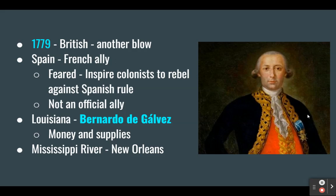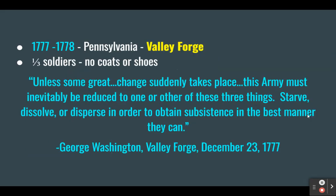In 1779, the British suffered another blow when Spain entered the war as a French ally. Spain also wanted to weaken the British Empire, but feared that American independence would inspire their own colonists to claim natural rights and rebel against Spanish rule. So Spain was not an official Patriot ally — just an ally of France. The Spanish governor of Louisiana, Bernardo de Galvez, provided money and supplies to Patriots and prevented British ships from entering the Mississippi River at New Orleans, a very important geographic point.